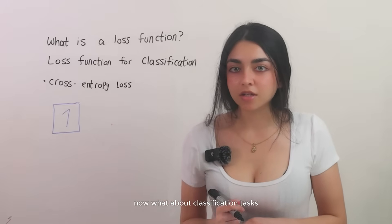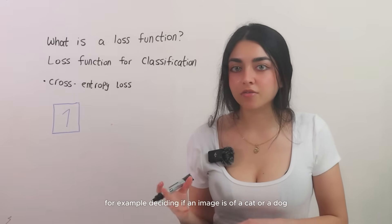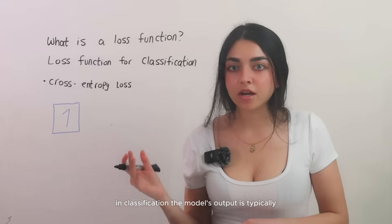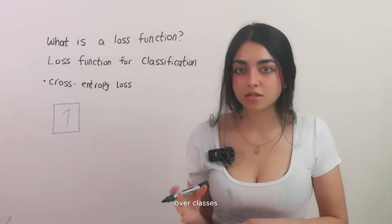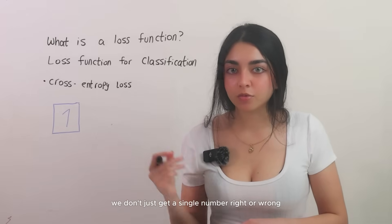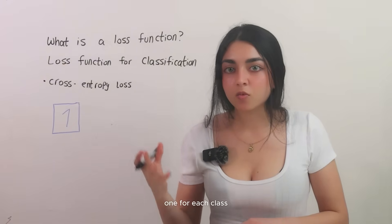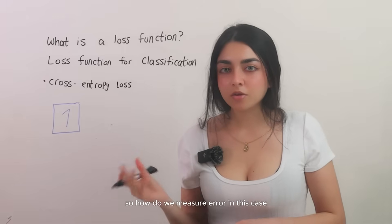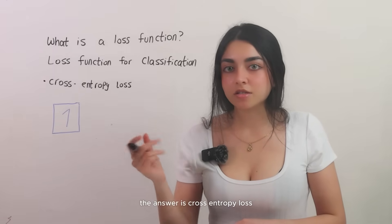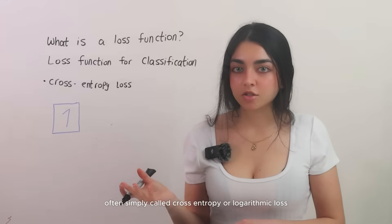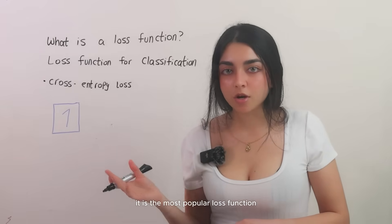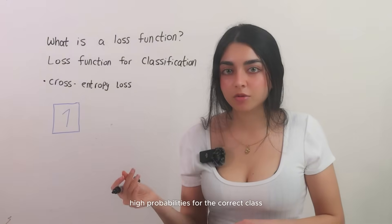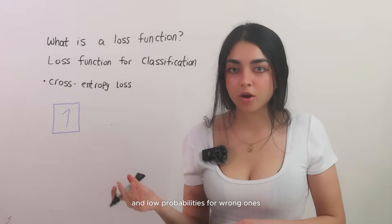Now, what about classification tasks? For example, deciding if an image is of a cat or a dog, or classifying handwritten digits. In classification, the model's output is typically a probability distribution over classes. We don't just get a single number, right or wrong. Instead, we get a set of probabilities, one for each class. And we have a definite correct class for each example. So how do we measure error in this case? The answer is cross-entropy loss, often simply called cross-entropy or logarithmic loss. It is the most popular loss function for classification problems because it is very effective at guiding the model to output high probabilities for the correct class and low probabilities for wrong ones.